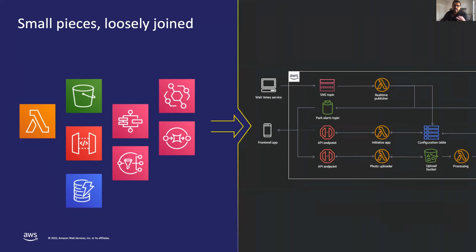One thing that is common across serverless applications is they follow design pattern-based practices: small pieces, loosely joined. All serverless applications are modular, composed from multiple AWS services and customer-developed components. That is why we are so focused on delivering integrations in our serverless offerings — Lambda, EventBridge, API Gateway, or Step Functions — to make it easy to build applications with loose coupling and high cohesion.